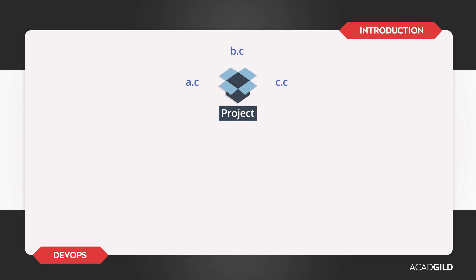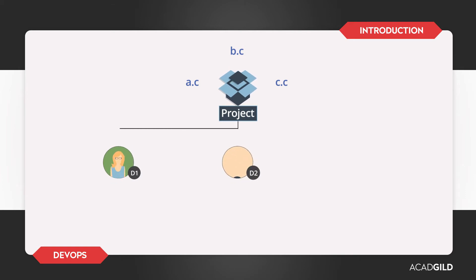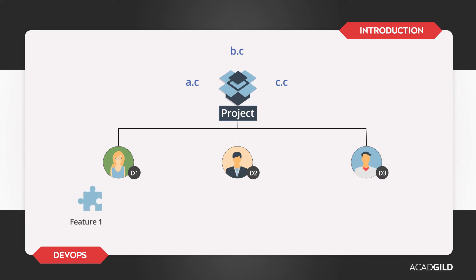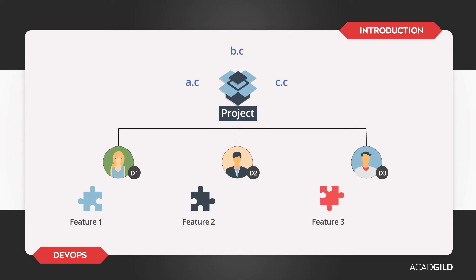Let us say there are three developers working on the project — Developer 1, Developer 2, and Developer 3 — who are working whole-heartedly towards the success of the project. Developer 1 is working on Feature 1, Developer 2 is working on Feature 2, and Developer 3 is working on Feature 3. In order to implement their features, the developers will modify the project files AC, BC, and CC.